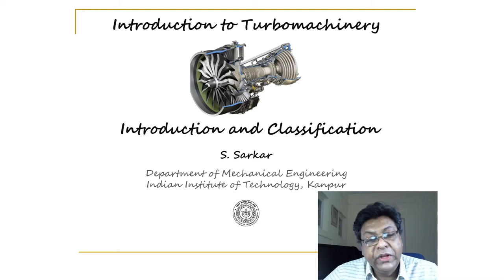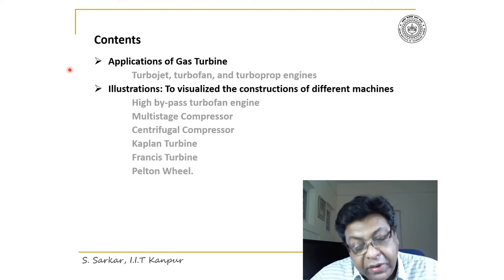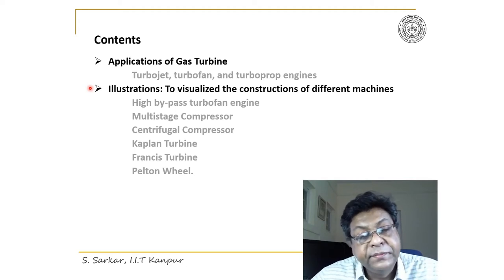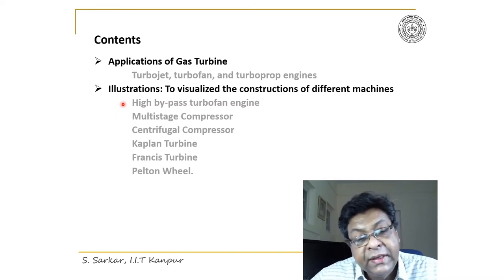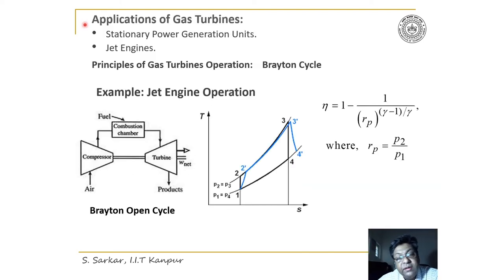Hello. I'll continue the discussion on introduction and classification of turbo machines. Contents of the lecture are application of gas turbines. Here I'll discuss turbojet, turbofan, and turboprop engines. I have also cited different examples illustrating constructions of different machines. I'll start from high bypass turbofan engine, then multistage compressor, centrifugal compressor, Kaplan turbine, Francis turbine, and Pelton wheel. I'll initiate the discussion with applications of gas turbines.